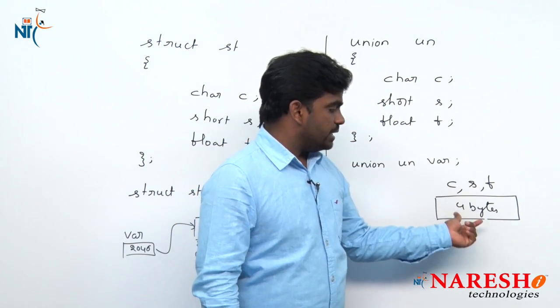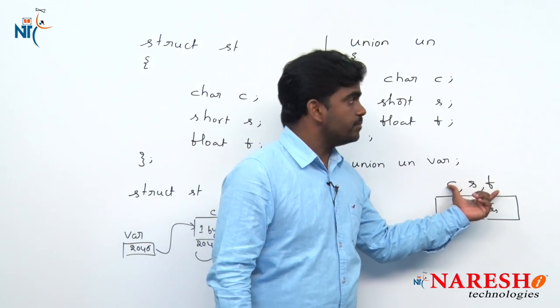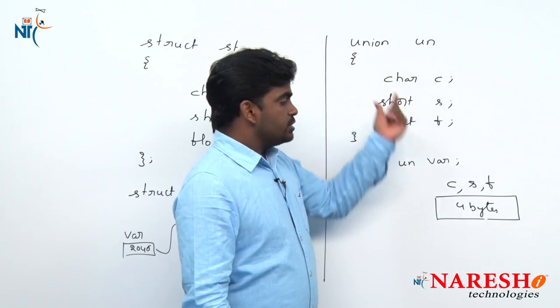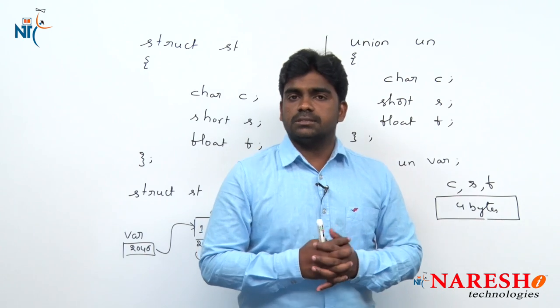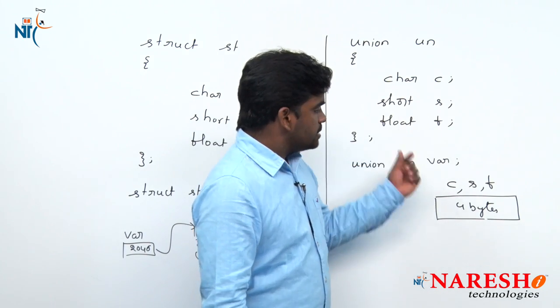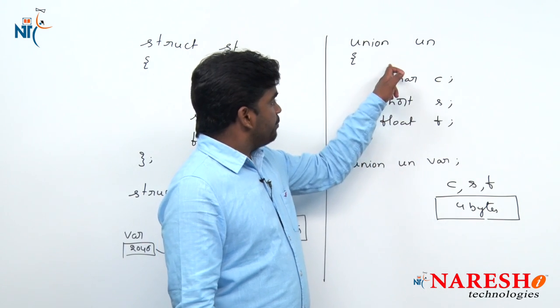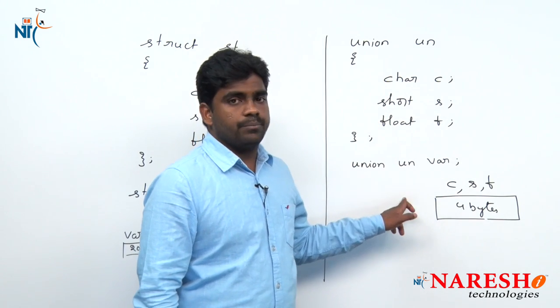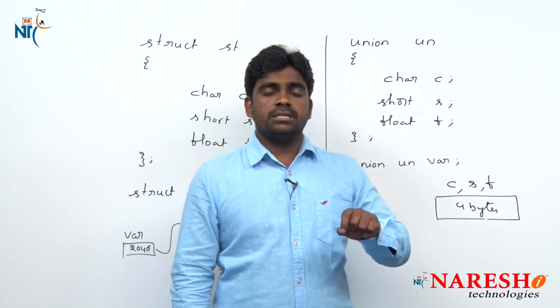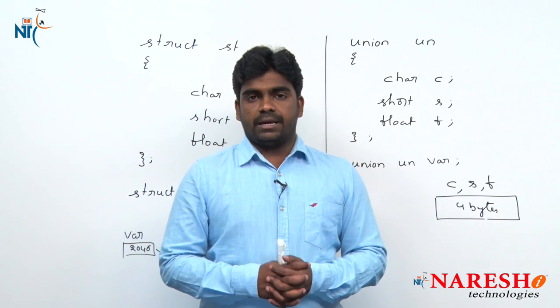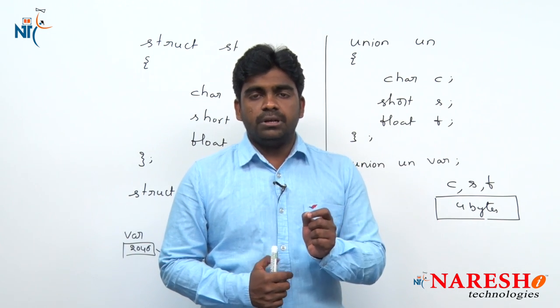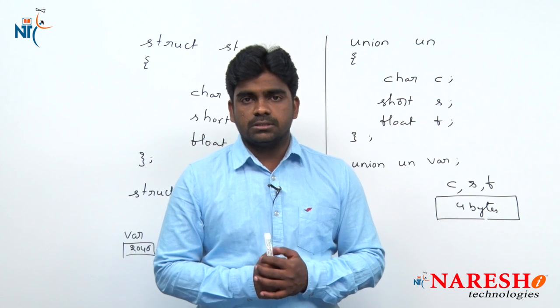If you use unions, all the elements declared inside the union are sharing the same memory locations. By that we can define N number of variables at a time, but we can process only one element at a time. We will see one example, then you will get more clarity on how unions execute.